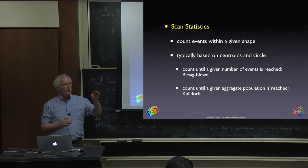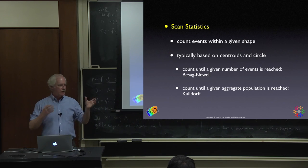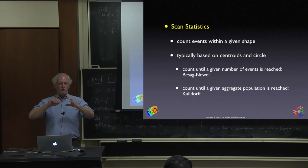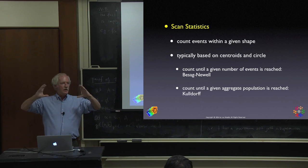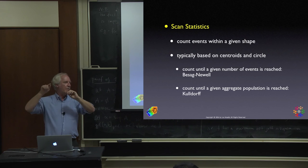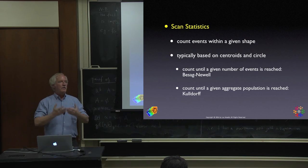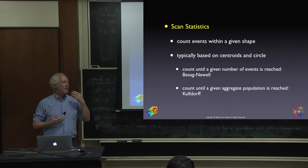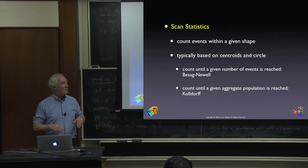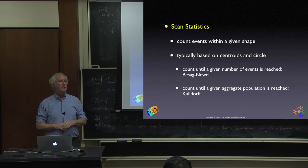The Besag-Newell statistic focuses on the numerator. You have a circle that keeps growing and you count events — say, 200 homicides — then stop and figure out how many people are in that area. Given that population and the average national risk, what is the probability of having 200 homicides? If that probability is small enough, you reject the null and call it a cluster.